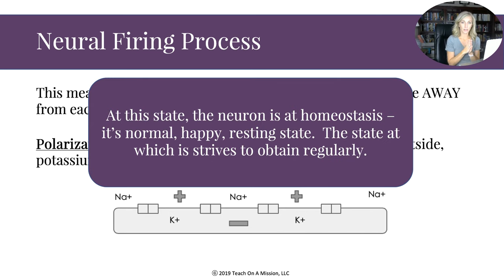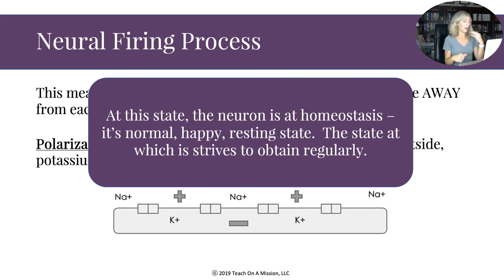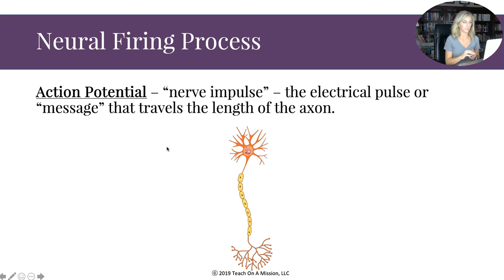At resting potential the neuron is polarized: sodium on the outside, potassium on the inside. This state is called homeostasis — the normal, happy state the neuron strives to maintain. Whenever it's not polarized, it works hard to return to homeostasis.